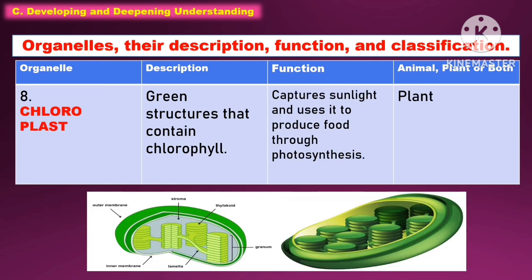Another organelle is the chloroplast. It is a green structure that contains chlorophyll. The function of this is to capture sunlight and use it to produce food through photosynthesis. It is only present in plant cells.